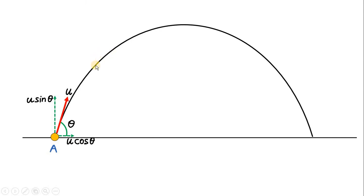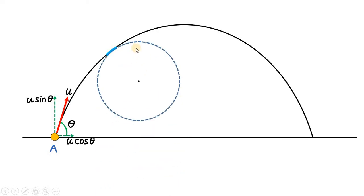We want to find the radius of curvature of a small piece of the parabolic path. Consider a very small arc length of the parabola. Imagine a circle whose curvature exactly fits on this small length. If the radius of this circle is r, then the radius of curvature of that small length of the parabolic path equals the radius of that circle, because the circle's curvature exactly fits the curve of the parabola.